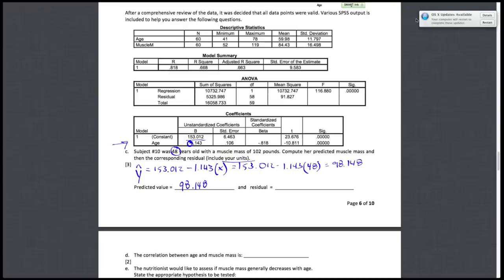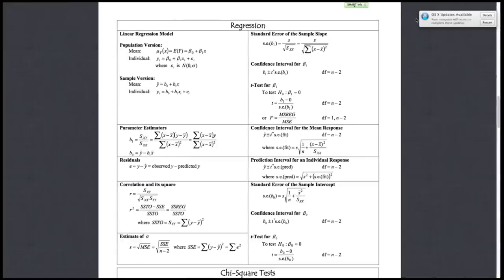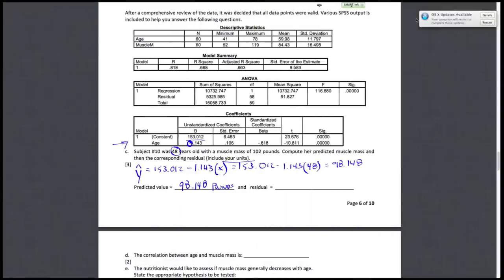Now, careful, because we want to make sure we include our units. So this is pounds. To find the residual, just as a reminder on my yellow formula card, this is the regression section. A residual is my observed value minus my predicted value. In this case, that's going to be she was actually 102, that's what was observed, and I predicted 98.148. And if I subtract those things, the difference is 3.852. Again, remember to include your units.